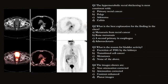Question number one: the hypermetabolic rectal thickening is most consistent with? The correct answer is choice A, primary rectal cancer. Question number two: what is the best explanation for the finding in the chest? The correct answer is choice C, a second primary in the esophagus. Question three: what is the reason for bladder activity? The correct answer is choice A, excretion of FDG by the kidneys. Question number four: the images shown are — the correct answer is choice B, attenuation corrected images.